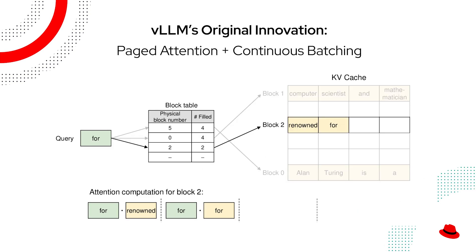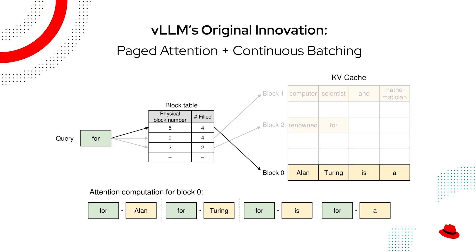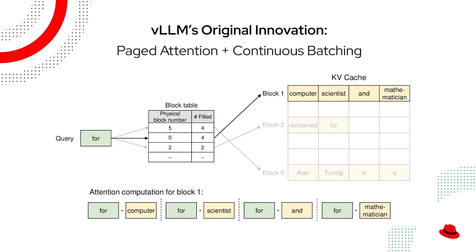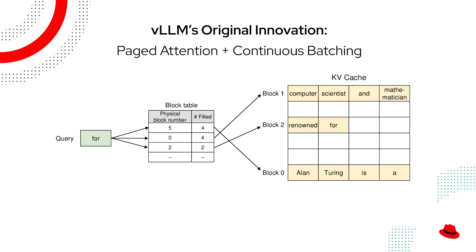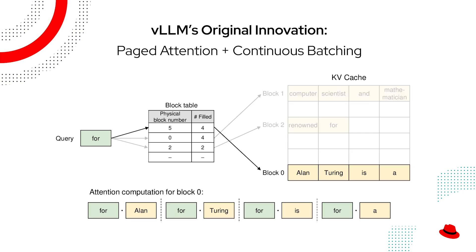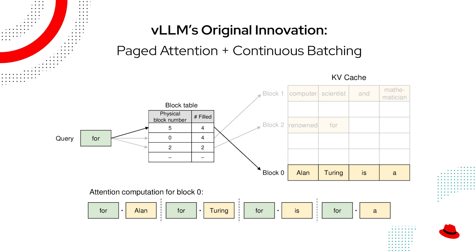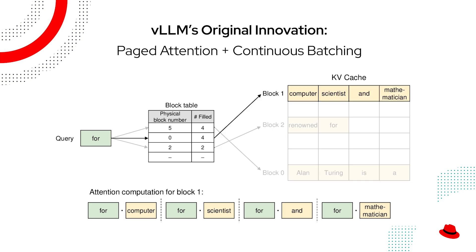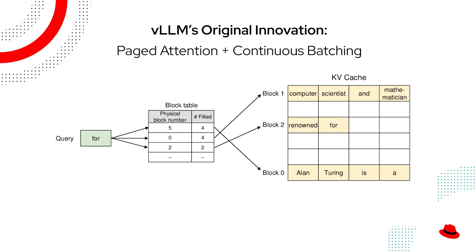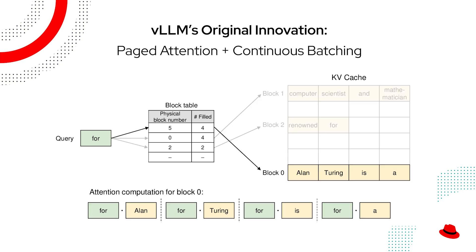Page detention cleverly manages short-term memory, or KV Cache as we call it, which language models use to maintain context. Similar to how your web browser caches frequently accessed data, page detention optimizes memory use by preventing waste and fragmentation. Originally inspired by operating system virtual memory techniques, it ensures peak performance even under heavy workloads.